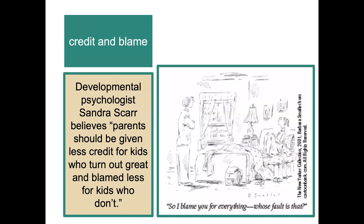Developmental psychologist Sandra Scarr believes parents should be given less credit for kids who turn out great and blamed less for kids who don't. Culturally in the United States, we often place blame for children's misbehaviors on parents, and give lots of credit when children are highly successful. But there are other factors at play — significant influence from underlying genetics and unshared environmental influences.